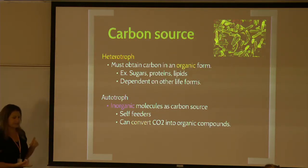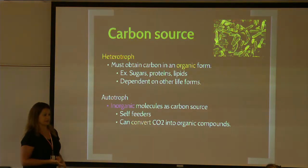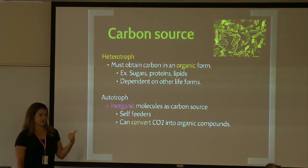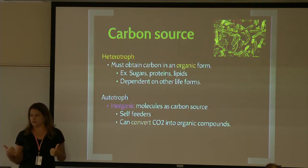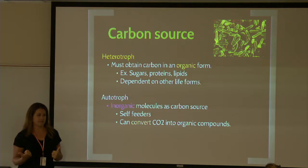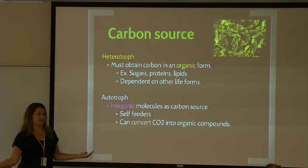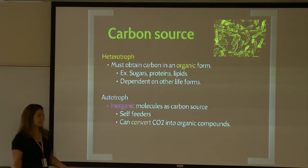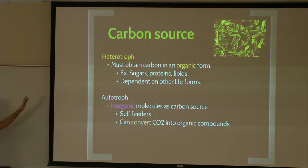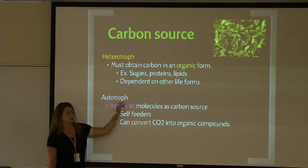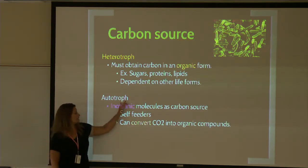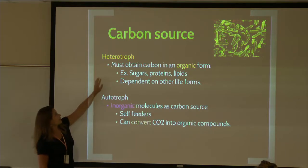These organisms can be categorized two ways: based on their carbon source and based on their energy source. Depending on those requirements, we assign them a name and a specific group. Based on carbon source alone, there are two categories: heterotrophs and autotrophs. The term 'troph' means feeding or food. Hetero means other — so heterotrophs feed off of other organisms for their carbon source.